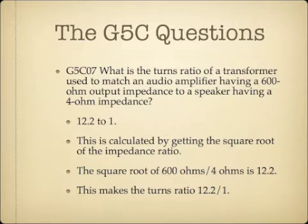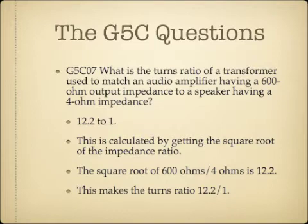What is the turns ratio of a transformer used to match an audio amplifier having a 600-ohm output impedance to a speaker having a 4-ohm impedance? The answer is 12.2 to 1. To calculate this, you take the square root of the impedance ratio. The impedance ratio is 600 ohms over 4 ohms, which is 150, and the square root of 150 is roughly 12.2. So the turns ratio is 12.2 to 1.